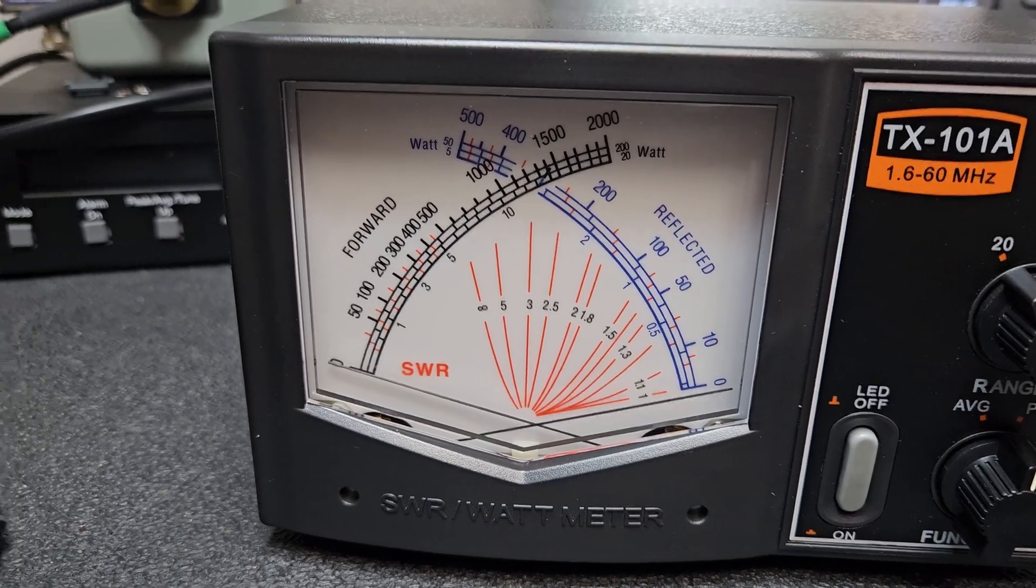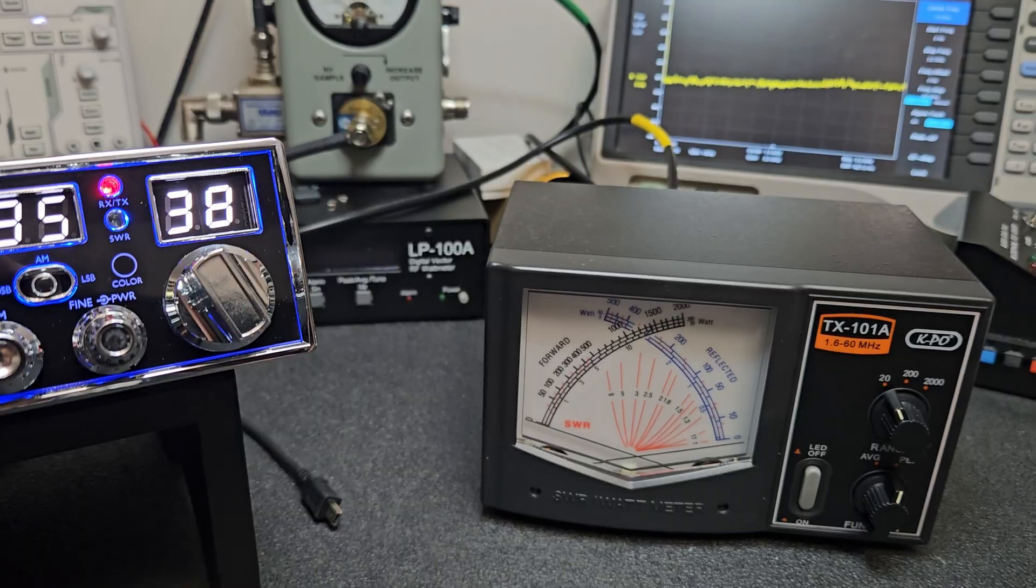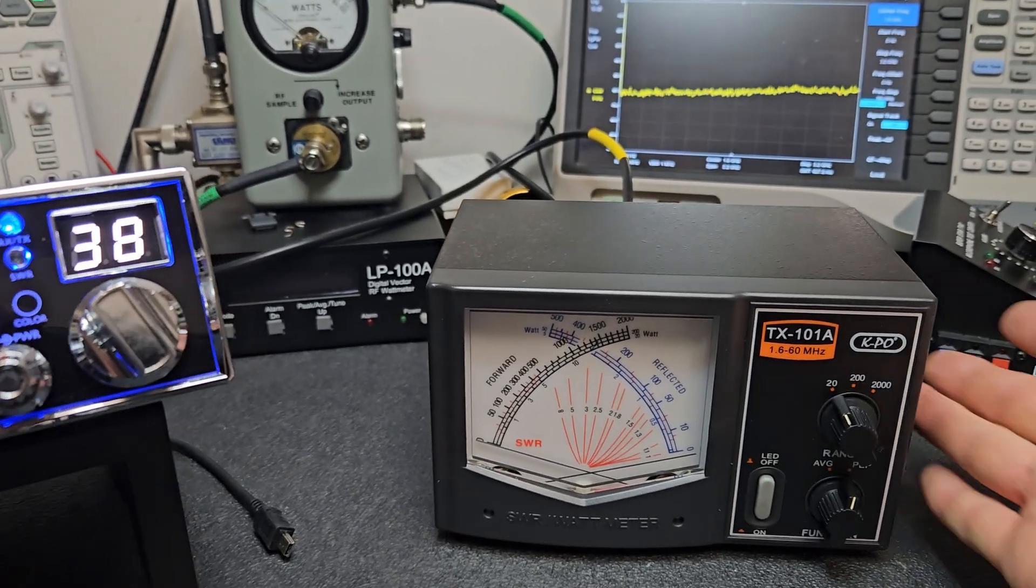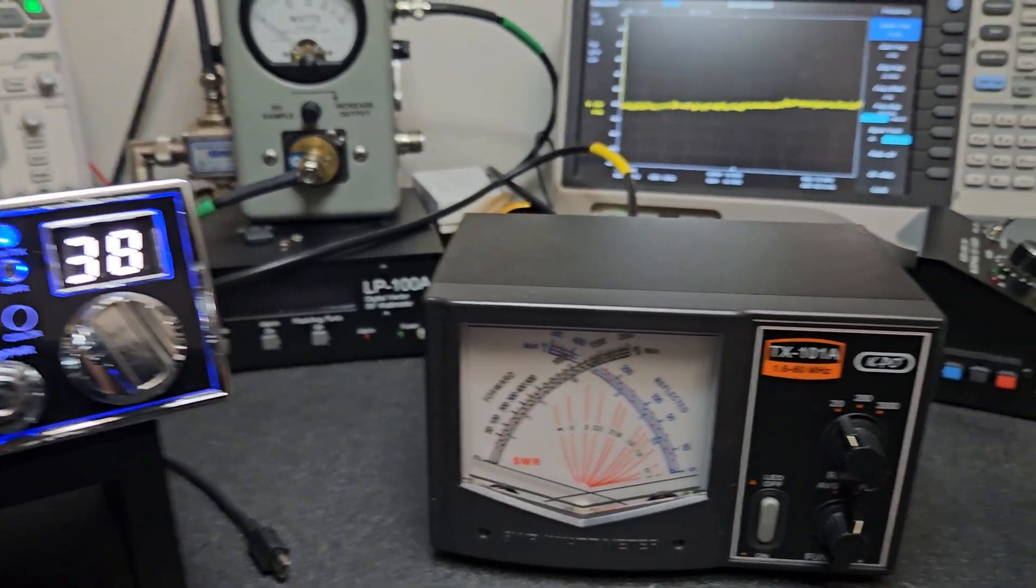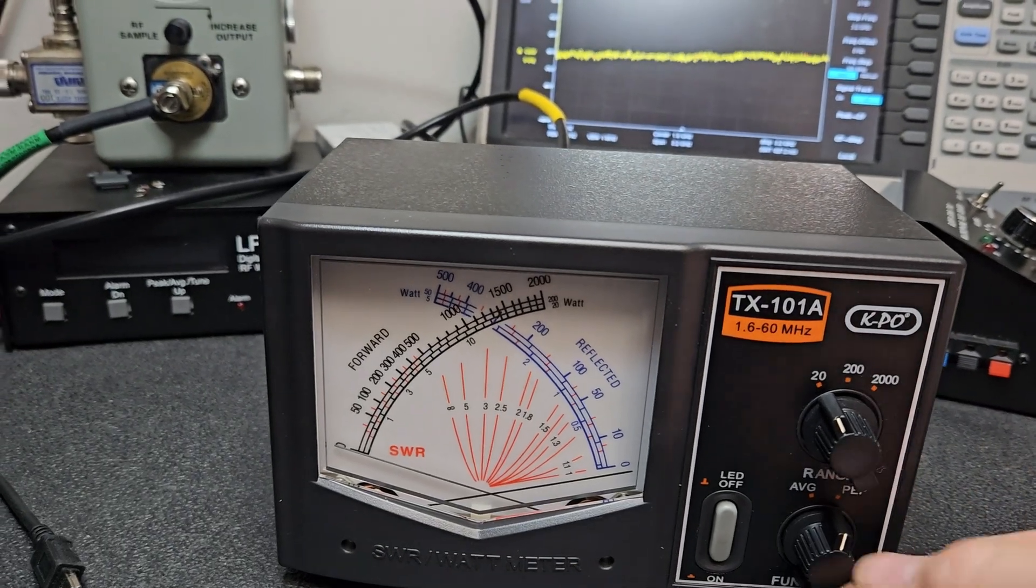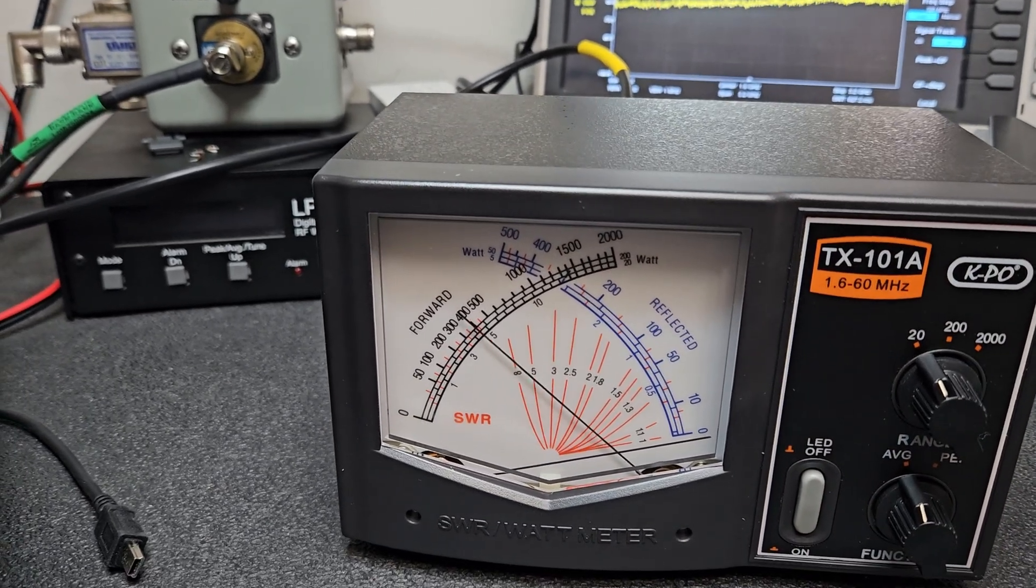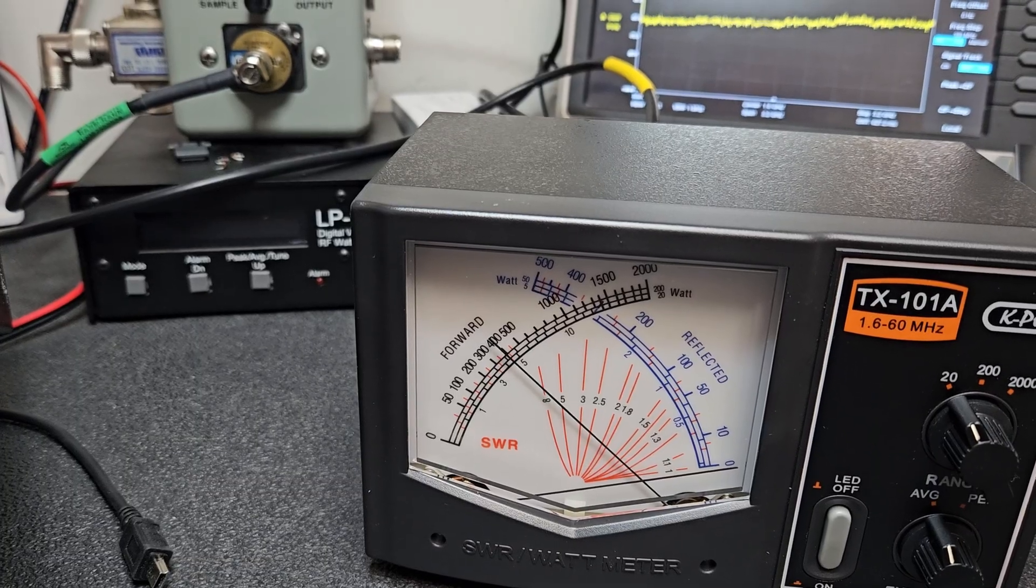I'm going to unhook the power plug on the back and put this in PEP mode. Without any power, the meter does not work in PEP mode. As you can see, I'm transmitting and it's not registering. That is normal.